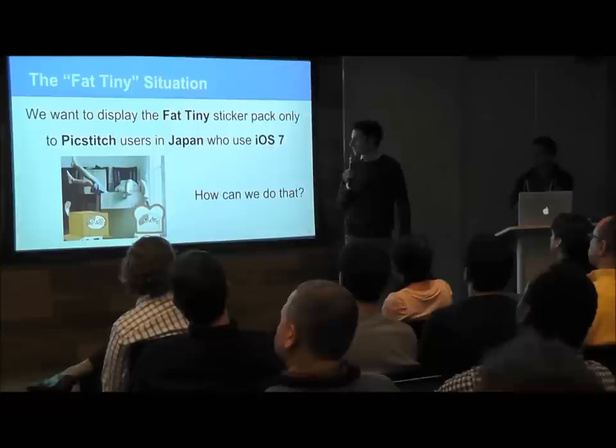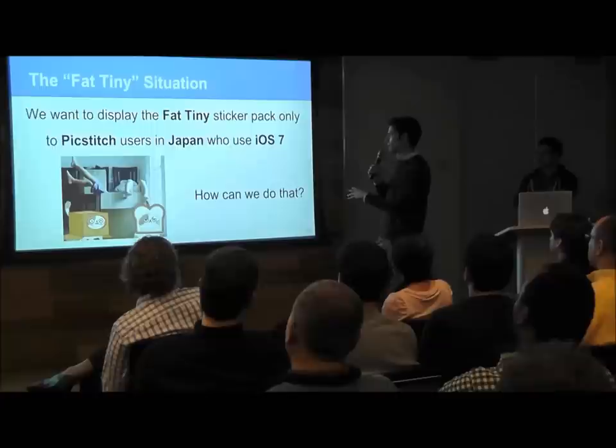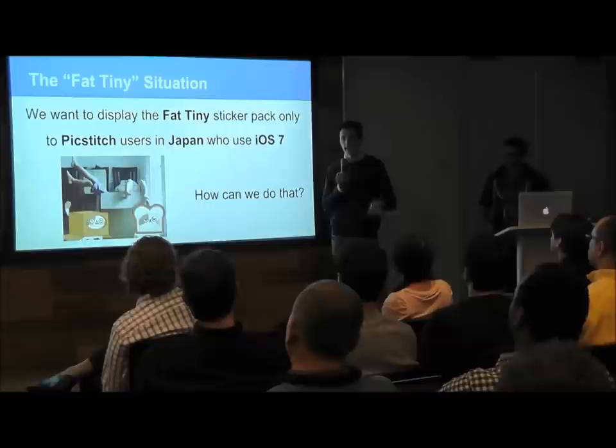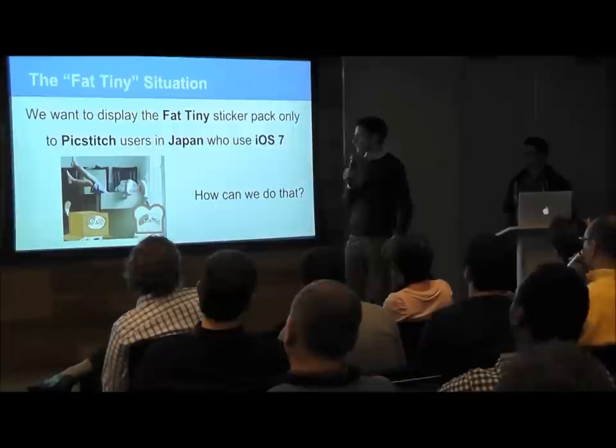We wanted to be able to target only PicStitch users, only those who were in Japan, and only those who used iOS 7. We realized that for generating revenue and selling content, targeting specific users based on what we call scope parameters was very important as the company grew.